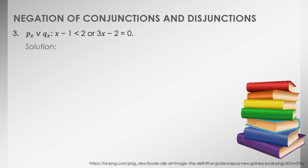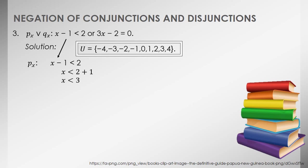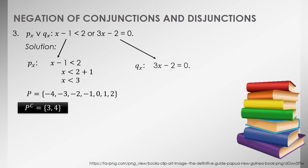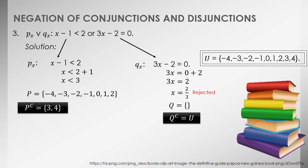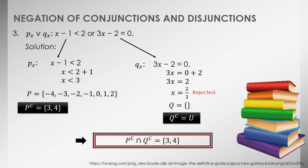For the last statement — also a disjunction — we work on P first. Solving the given inequality, we find values satisfying it, and by considering the universal set we obtain set P and P complement. For Q — a linear equation — we solve for the value of x. Considering the universal set, the obtained value of x is found nowhere in the set, so the value is rejected and Q is an empty set. Q complement is then determined. Finally, we have the truth set for the negation of the third given statement.